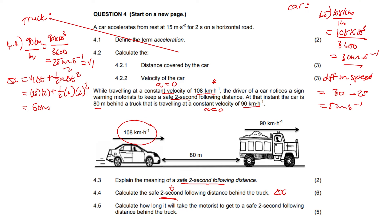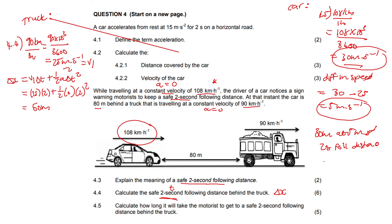The car has to travel 30 meters at 5 meters per second to reach a two-second following distance behind the truck. Using the basic distance formula — distance equals speed times time — our speed is 5 m/s and our distance is 30 meters, so time is unknown. Solving gives 6 seconds. It will take 6 seconds for the motorist to reach a safe two-second following distance behind the truck.